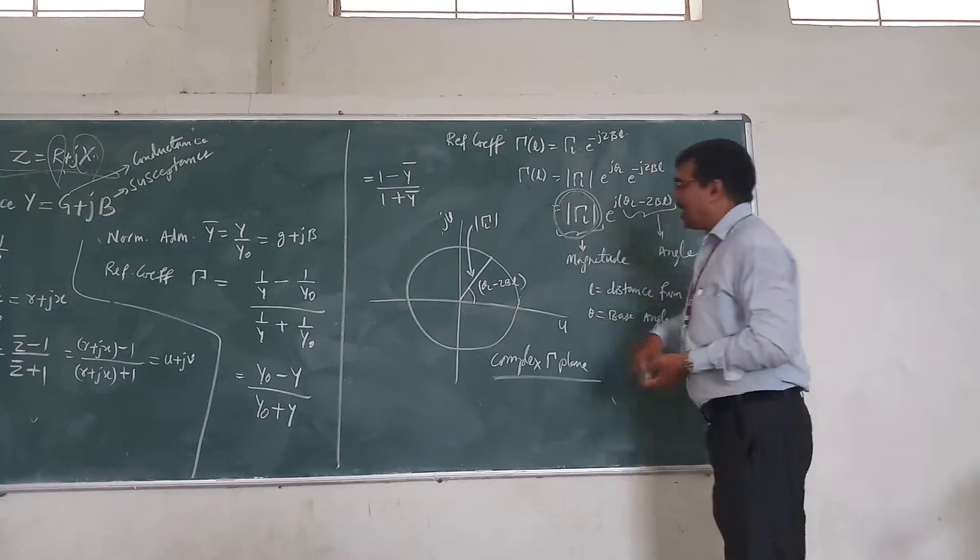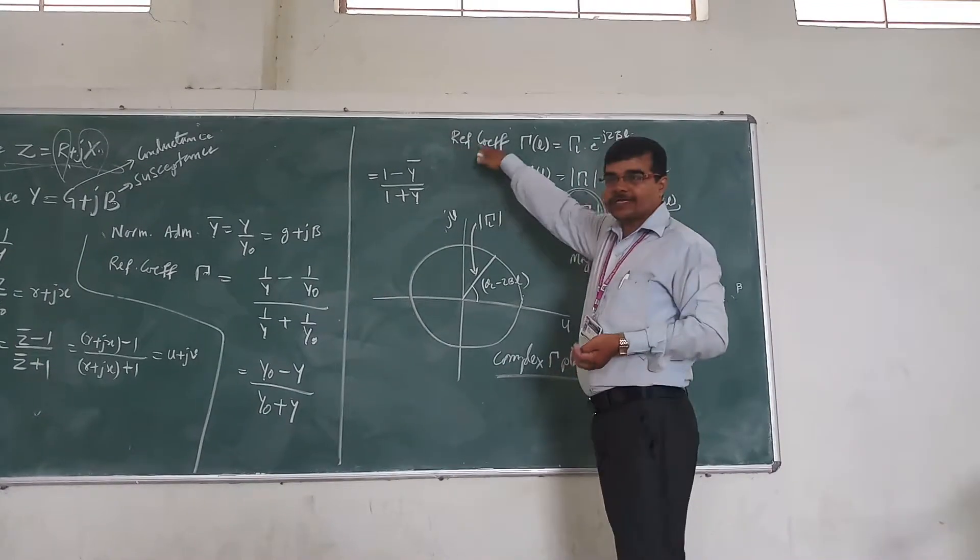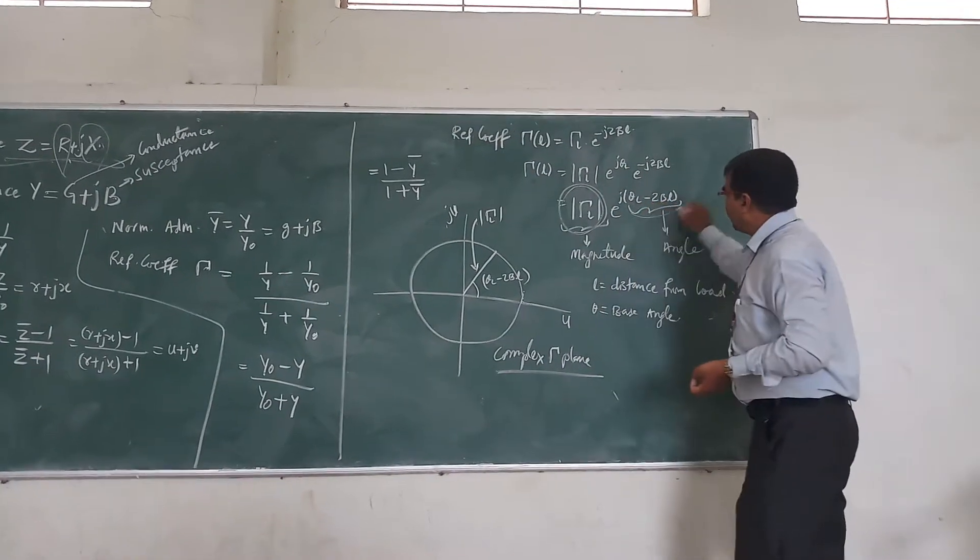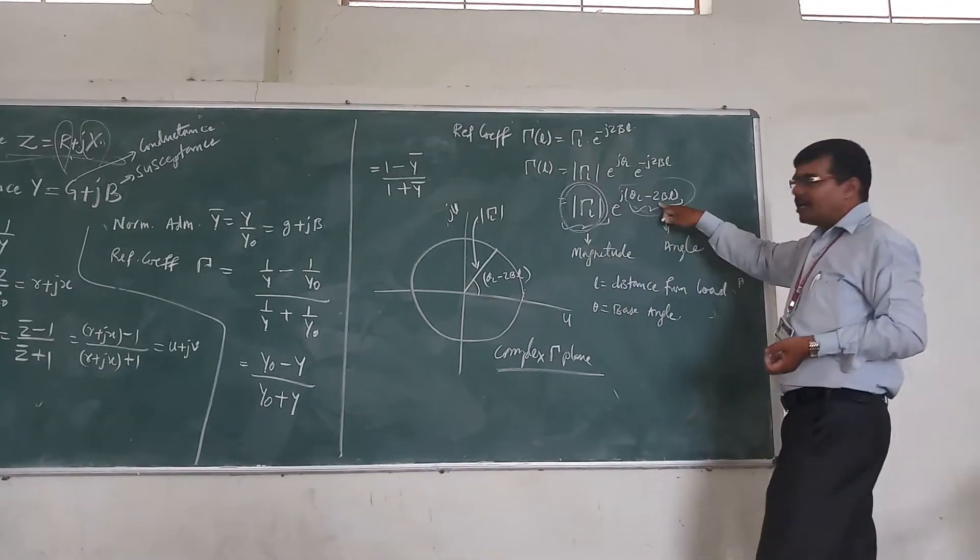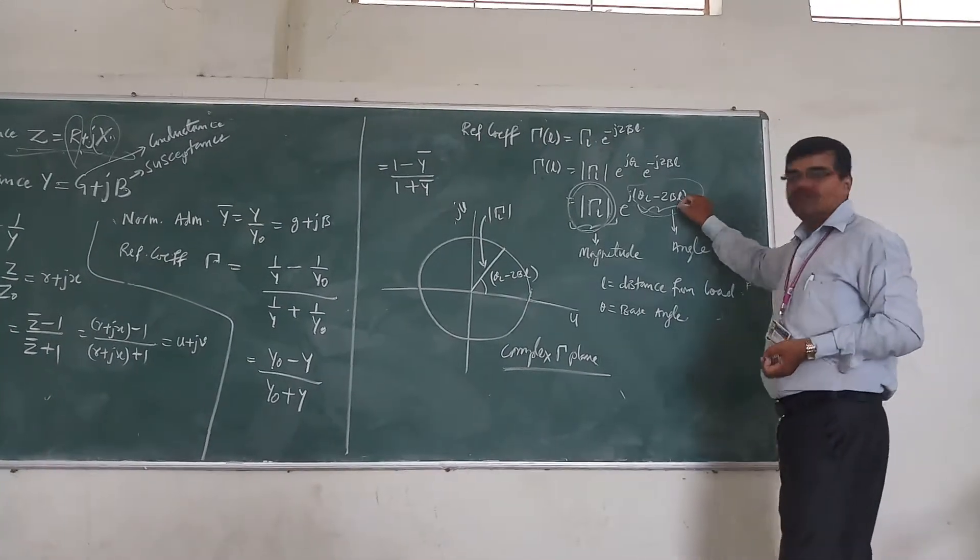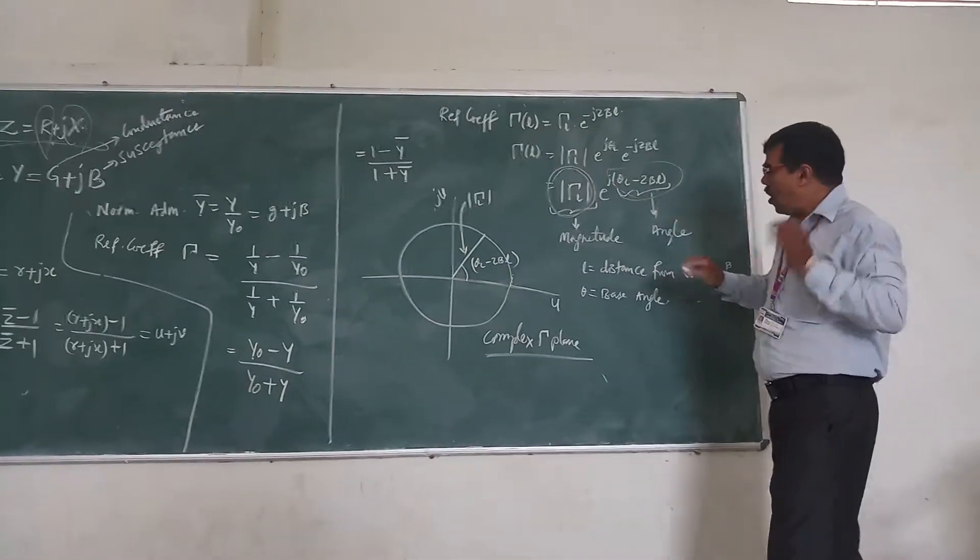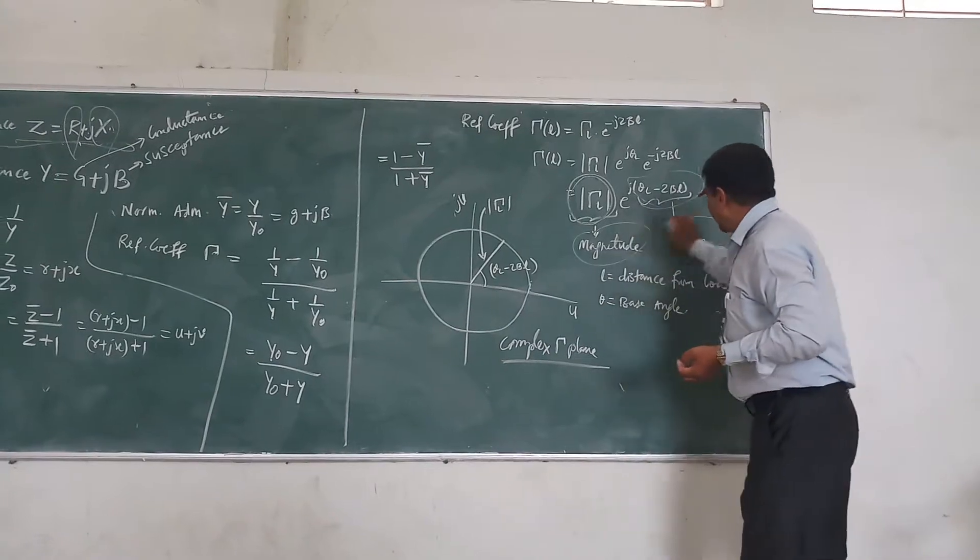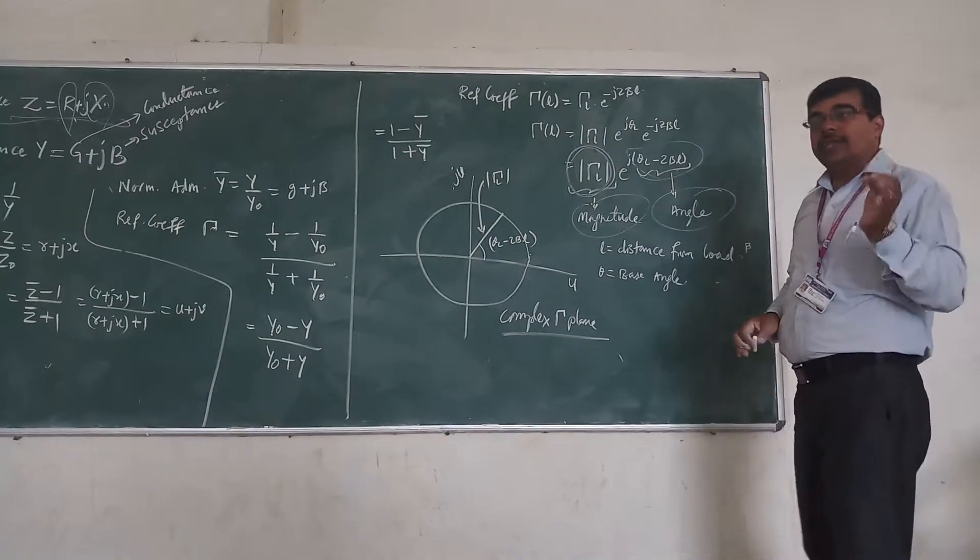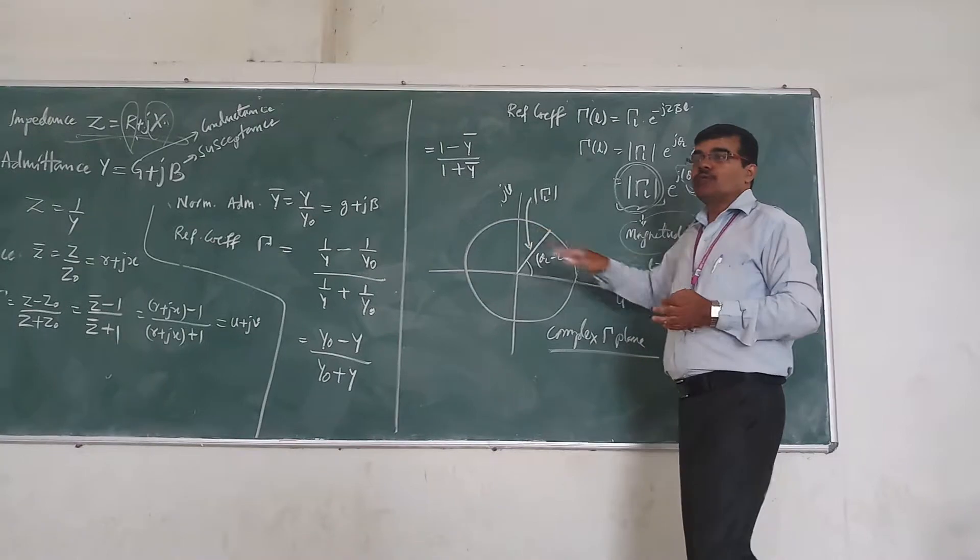This part is your magnitude in case of your reflection coefficient. And theta L minus 2 beta L, this will be the angle. Now, as we know the magnitude and the angle, we can represent it in the Smith chart.